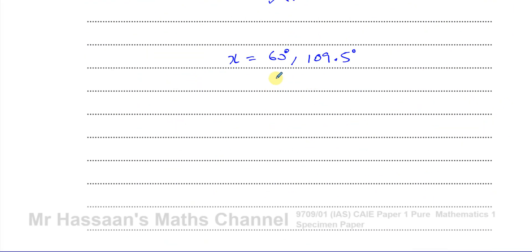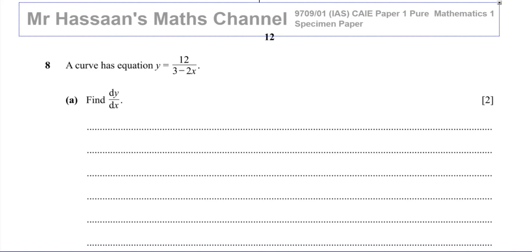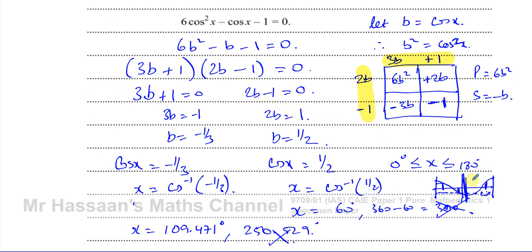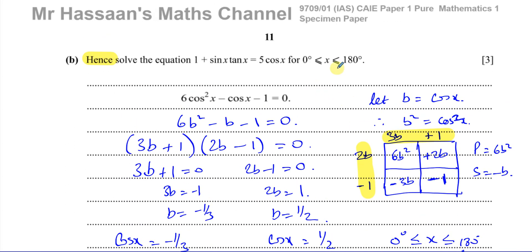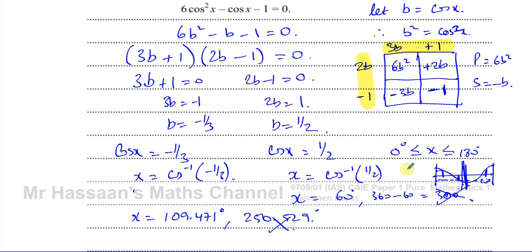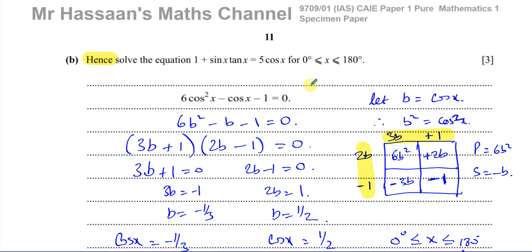So the answer to part B is x equals 60 degrees and x equals 109.5 degrees. This required understanding the symmetry of the cosine curve. We'll cover more detail on wider ranges and rules for sine and cosine in later questions. Other questions from this specimen paper and trigonometry questions from P1 Cambridge can be found in the playlists at the end of the video. Thank you for watching, see you soon.